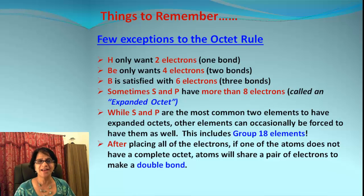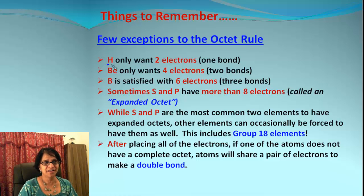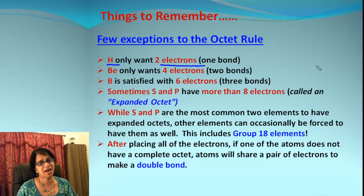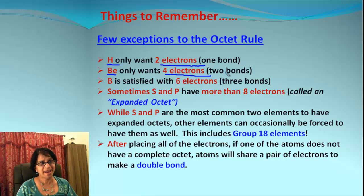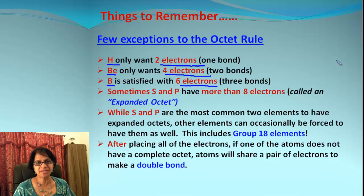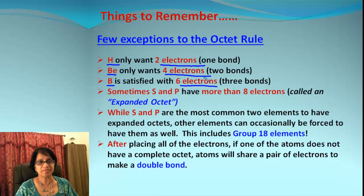Every rule has exceptions, and so does the octet rule. Exception number one: hydrogen can only take a maximum of two electrons. Beryllium only needs four, not eight. And boron is satisfied with six electrons. It's like when you go for all-you-can-eat pizza — somebody can be happy with two slices, somebody with four, somebody with six, and of course some people might need eight.